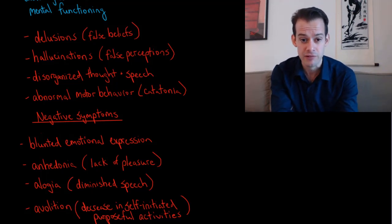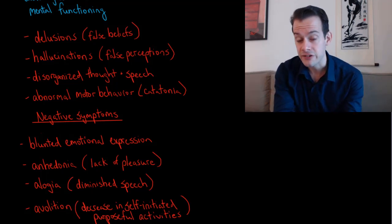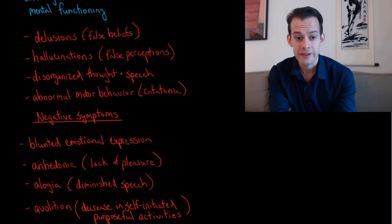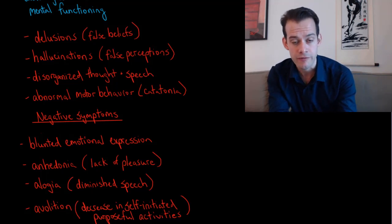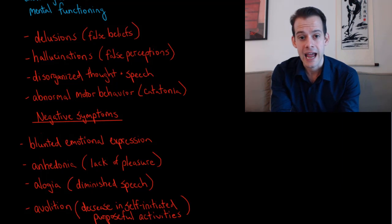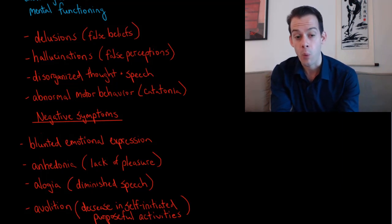Then we have hallucinations, which refers to false perceptions. This could be hearing voices or seeing things that aren't actually there. Then we have disorganized thought and speech. In patients with schizophrenia it's very difficult to follow their thinking. Their speech is often described as being incoherent or as being word salad, a jumble of words and ideas all mixed together and incomprehensible.